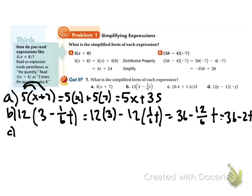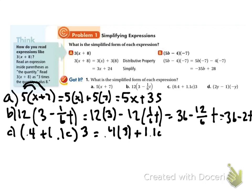In problem c, I have (0.4 plus 1.1c) with a 3 on the outside. So I distribute the 3 to the 0.4 and to the 1.1c: 0.4 times 3 plus 1.1c times 3 gives me 1.2 plus 3.3c.